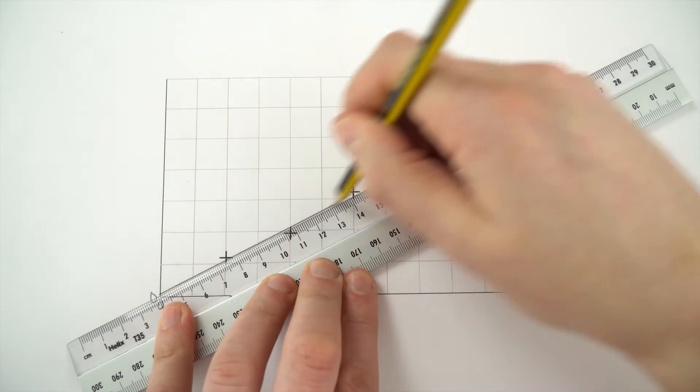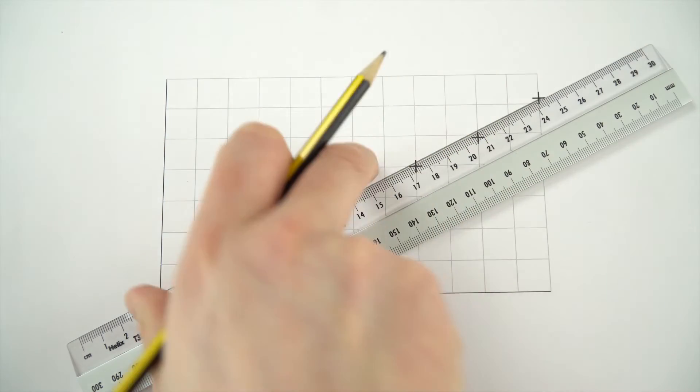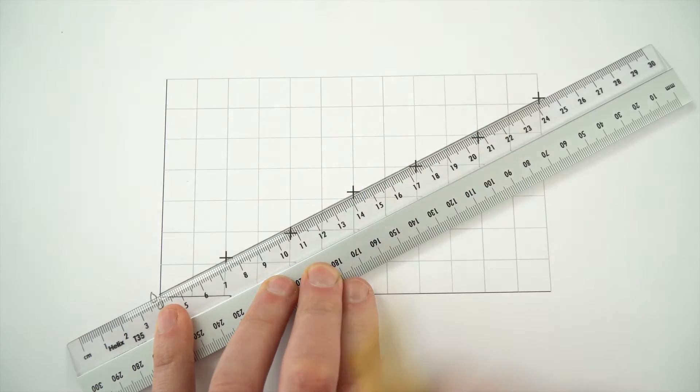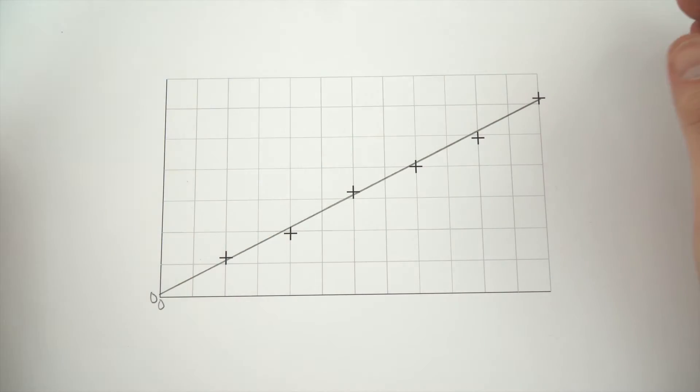What I can then do is, using a 30cm ruler, rather than trying to draw it twice with a 15cm ruler, we then just put in our line of best fit, just like that.